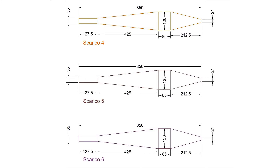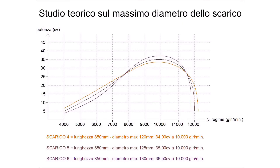Exhaust 4 has a diameter of 120, exhaust 5 is 125, exhaust 6 is 130. All three mufflers have the starting and ending diameters equally: 35 at the beginning, 21 at the end. Exhaust 5 is identical to exhaust 2, so it will have the same curve that will act as a reference. By observing the comparative graph that features the mufflers with the same length but different diameters, we can see what variations are present in the power curve. Our reference will always be exhaust 5, the medium one, giving a maximum power of 35hp at 10,000 rpm.